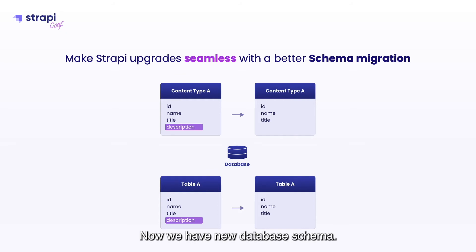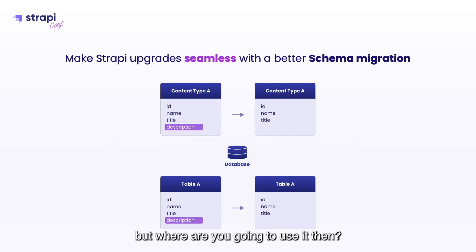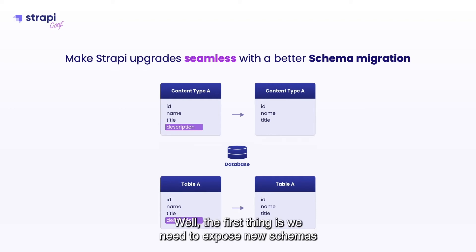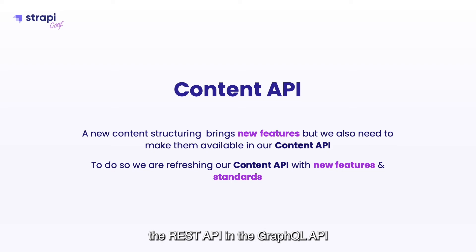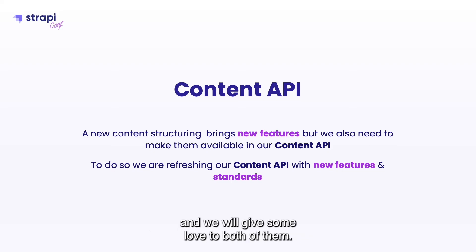Now we have a new database schema and great features in the DB — but how are you going to use it? The first thing is we need to expose those new schemas to the content API. In the content API we have two parts: the REST API and the GraphQL API, and we will give some love to both of them.